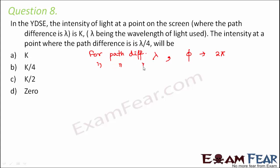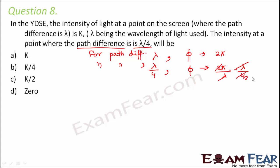Now the path difference in question is lambda by 4. So in that case, our phase difference will be (2π / λ) × (λ/4). Lambda cancels, so this will be π/2. That is our phase difference.